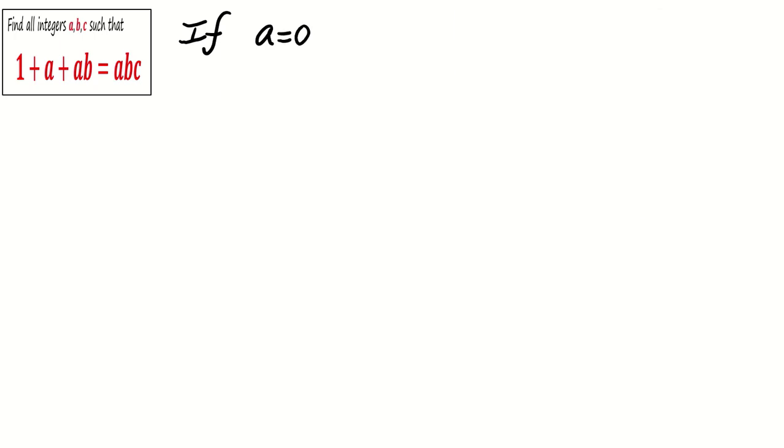If a = 0, the left hand side of the equation is 1 + a + ab, which equals 1, while the right hand side is abc, which is 0.